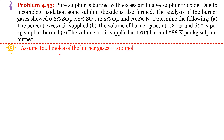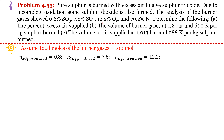We assume total moles of burner gases equal to 100 moles. So moles of SO3 produced equal to 0.8, moles of SO2 produced equal to 7.8, moles of O2 unreacted equal to 12.2 — this is the unburned O2 coming out in the leaving gases — and amount of inert N2 equal to 79.2, which remains the same before and after reaction.